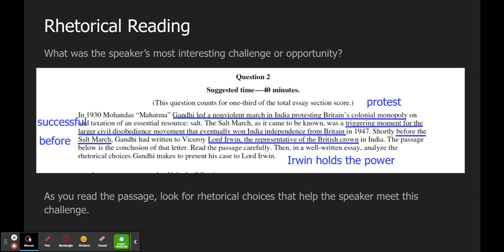So let's look at the introductory context to this prompt. And again, I'm looking for that challenge or opportunity. Let's see, 1930, Gandhi led a nonviolent march in India protesting Britain's colonial monopoly. So this was a protest, fair enough, on the taxation of an essential resource: salt. And let's see, this was a triggering moment for the larger civil disobedience movement that eventually won India independence from Britain. So it was a successful protest. It eventually worked. And that happened in 1947.